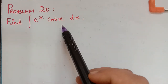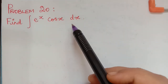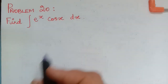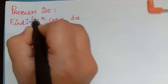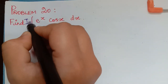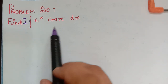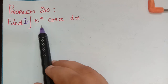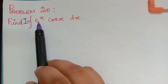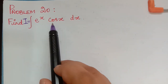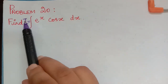This problem is the same as problem number 19, where we had the integral of e^x sin x dx. The first step is to represent this complete integral as capital I. Whenever we have a combination of an exponential function and a trigonometric function, we should represent the integral as capital I.